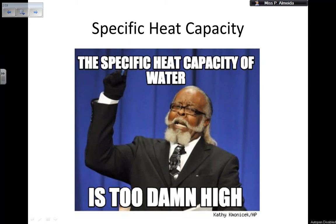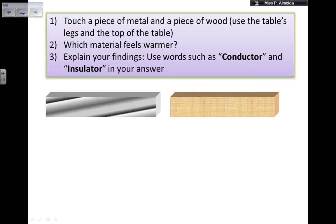Today I'm going to be telling you about specific heat capacity — this is GCSE revision. Let's start with an exercise. Imagine you're sitting down in a classroom or at home and you try to touch a piece of metal with one hand and a piece of wood with the other at the same time. For example, a table with wooden top and metal legs — one is wood and the other is metal.